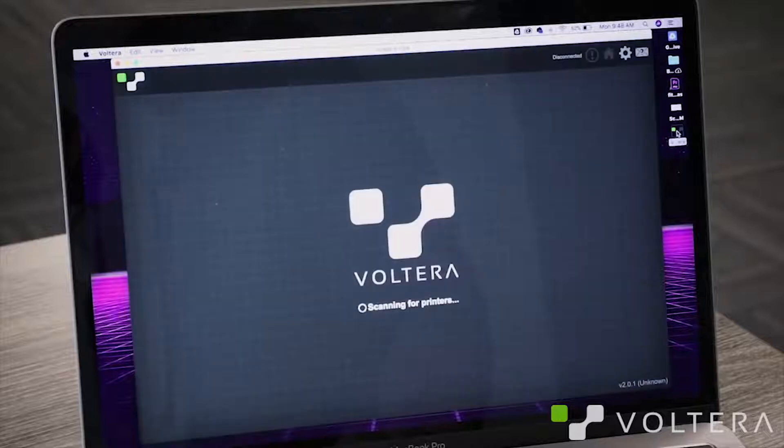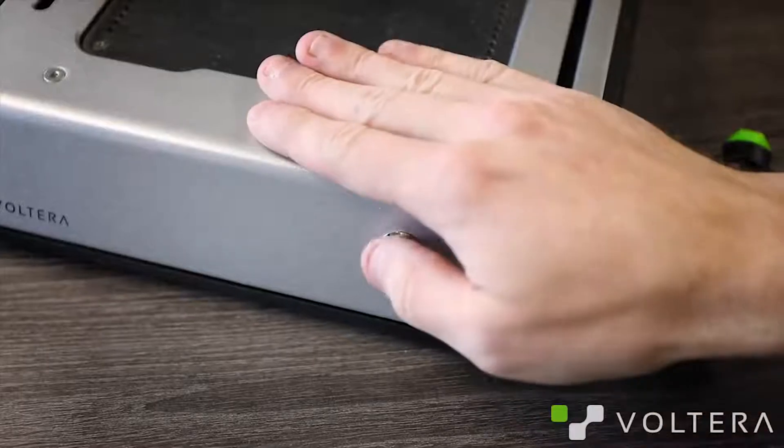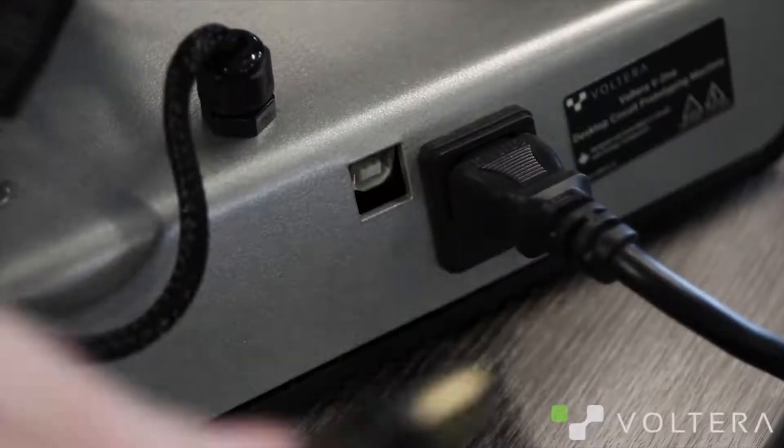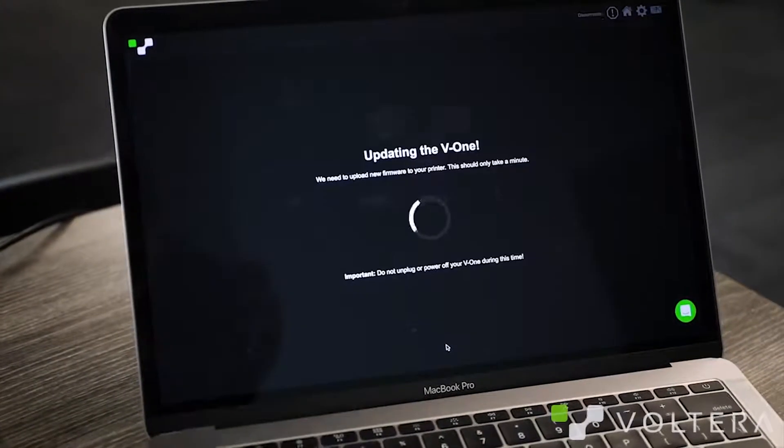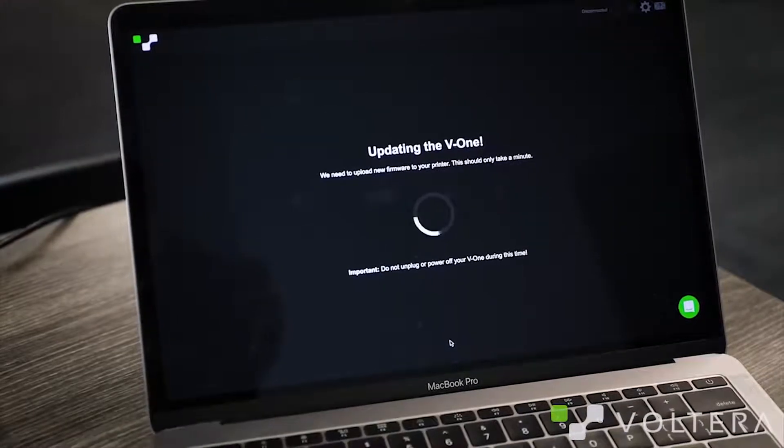First, we're going to launch the V1 software that we got from the Volterra website. Next, we're going to power up the printer and plug it into our computer using the provided USB cable. You'll see the Volterra software recognizes the printer and automatically starts updating to the latest firmware. Make sure your computer is connected to the internet or we're going to have a bad time.